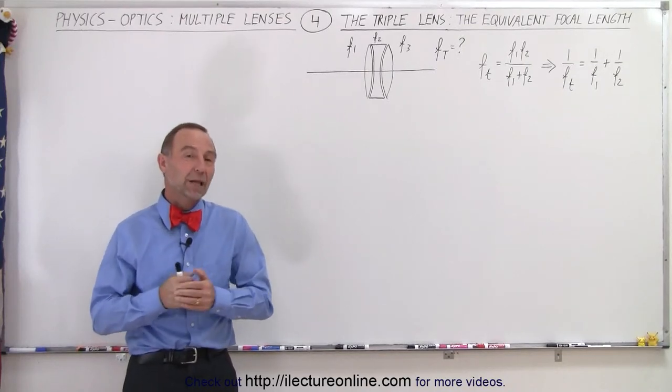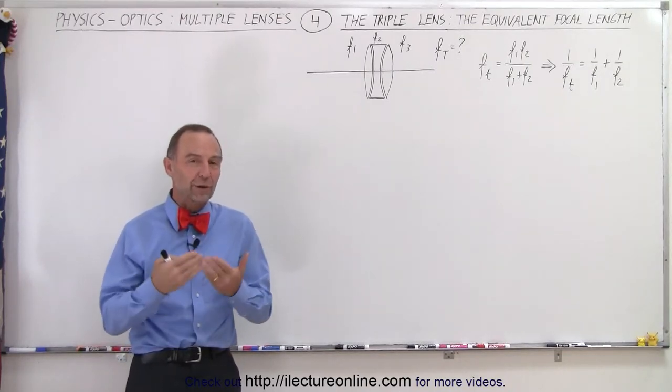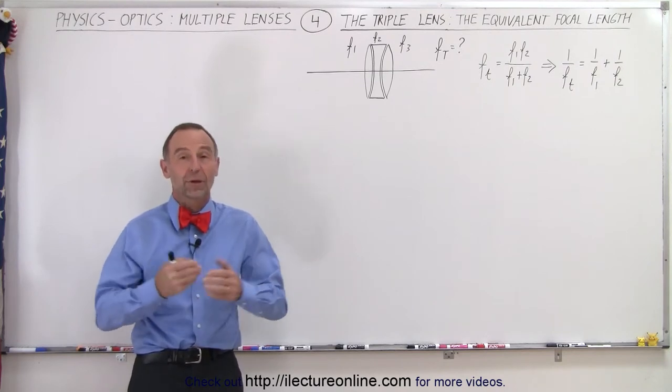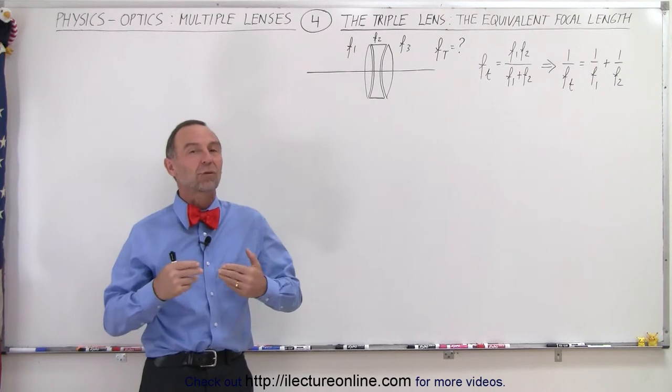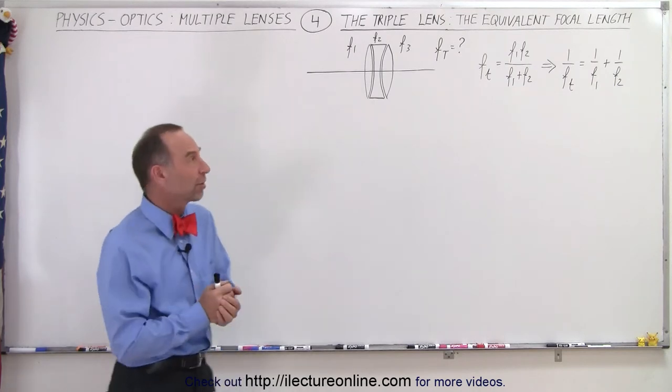Welcome to our lecture online. Now that we have an equation for the equivalent two-lens system, at least the equation to find the focal length of two lenses combined, now let's try to find the equation for three lenses combined.